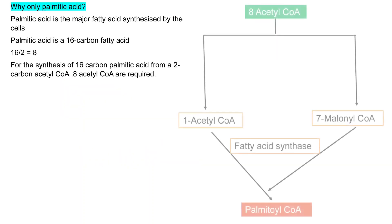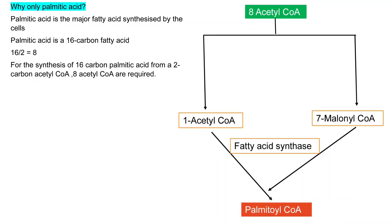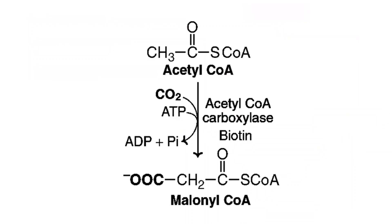Out of the 8 acetyl-CoA required, only 1 molecule takes part in synthesis as such. The remaining 7 acetyl-CoA molecules participate in the reactions of fatty acid synthesis in the form of malonyl-CoA. Acetyl-CoA carboxylase is the enzyme that converts acetyl-CoA into malonyl-CoA — acetyl-CoA, a 2-carbon compound, reacts with carbon dioxide to form malonyl-CoA in a carboxylation reaction requiring ATP and the coenzyme biotin.